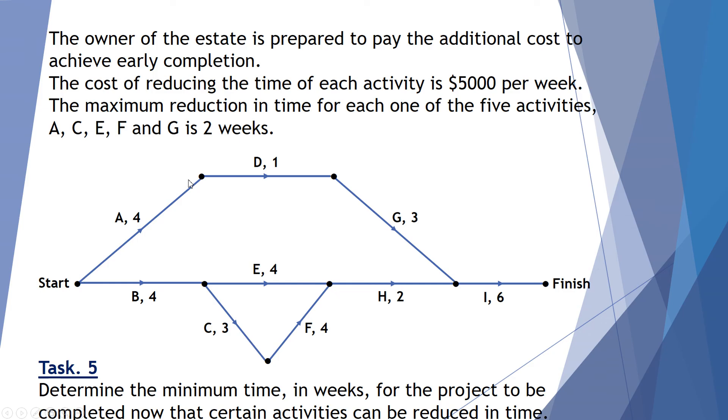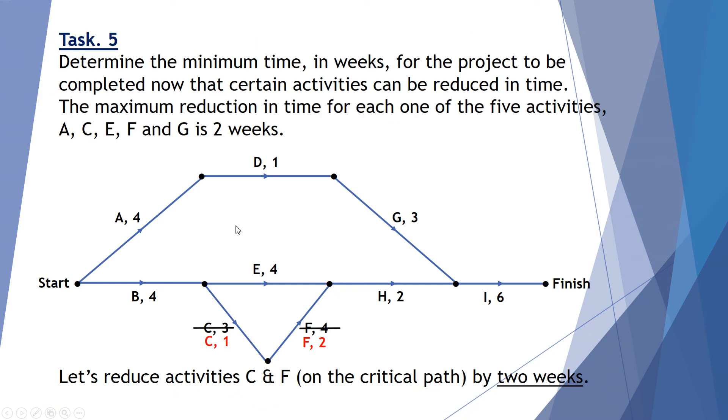So A, C, E, F and G can be reduced by 2 weeks. So first of all, let's reduce something on the critical path. C and F. So C was 3. Let's maximize the 2 week reduction to 1. F was 4. Let's maximize that reduction down to 2. Reduce both of them by 2 weeks.